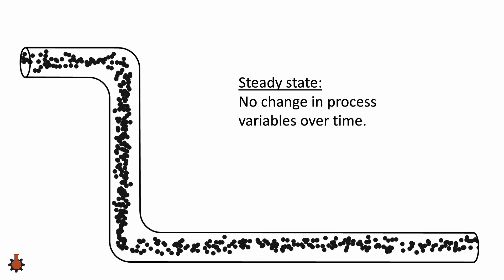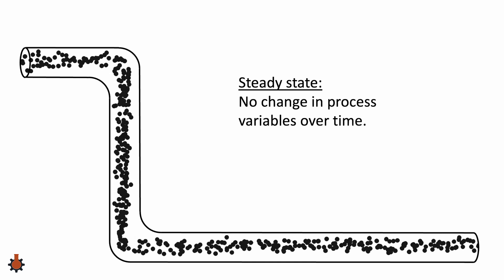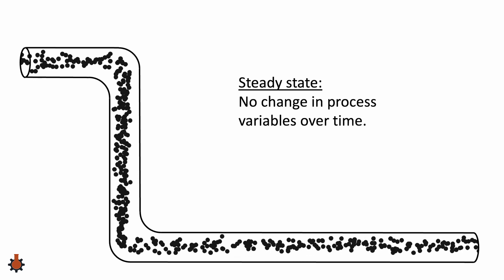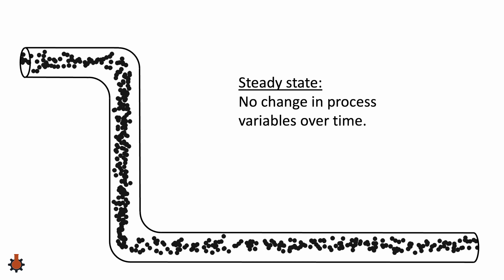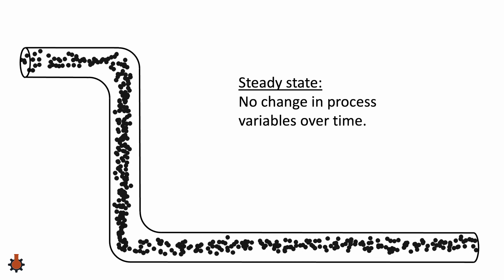we see that over time the values remain constant throughout. The inlet and outlet remains the same, and at any given position the number of dots remains the same. It's easy to convince ourselves here that this system is at steady state.